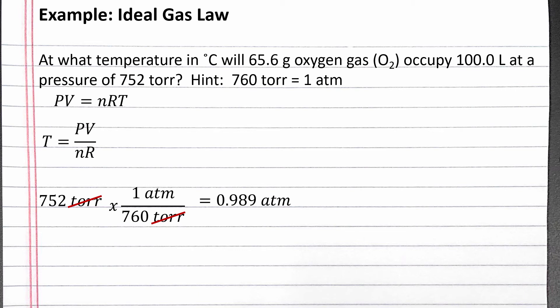We also need to use dimensional analysis to convert from grams oxygen gas to moles oxygen gas. Oxygen is one of our seven naturally occurring diatomic elements, so when we see oxygen gas, it almost always means O2. Completing the calculation, we have 2.05 moles oxygen gas.